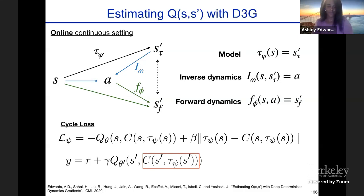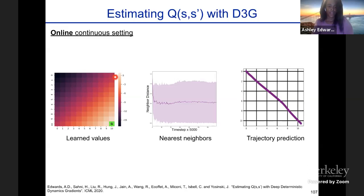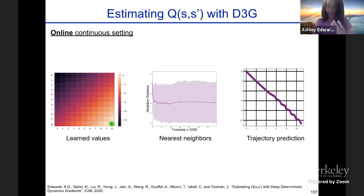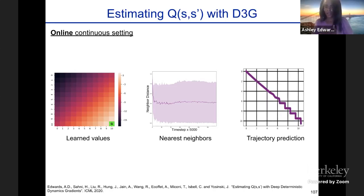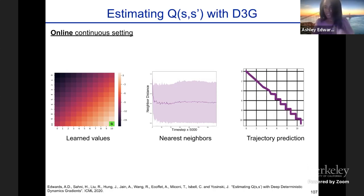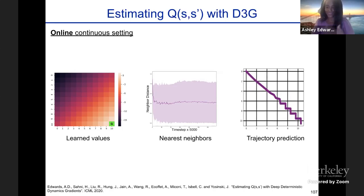After updating our loss with this regularization, our approach did much better. The learned values are no longer overestimated, and the neighbors predicted by model τ are no longer placed outside the grid. As training progressed, predictions became more and more grid-like — which is exactly what you want. Interestingly, this model never received any actions; it's only trained to maximize its Q(S,S') values, yet it can now make reasonable next-state predictions.